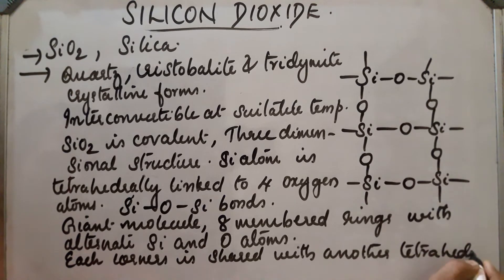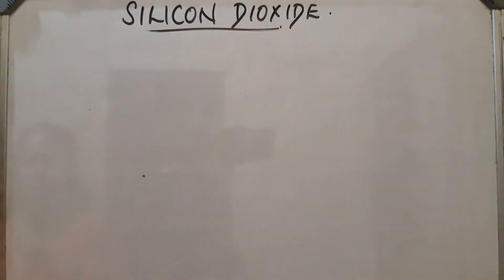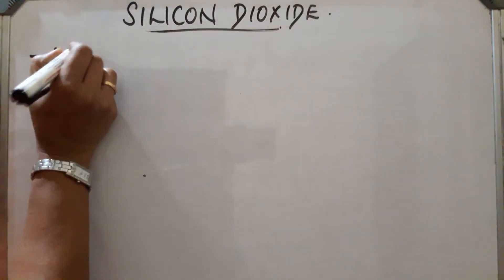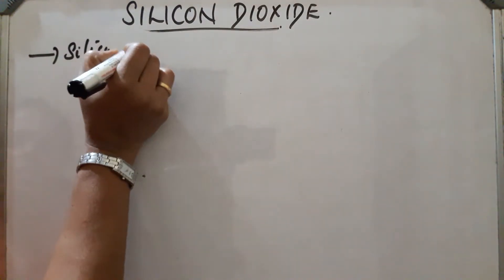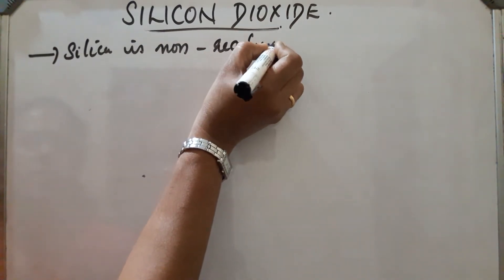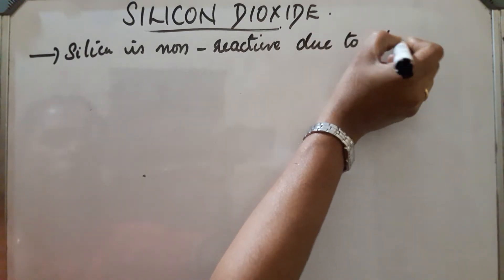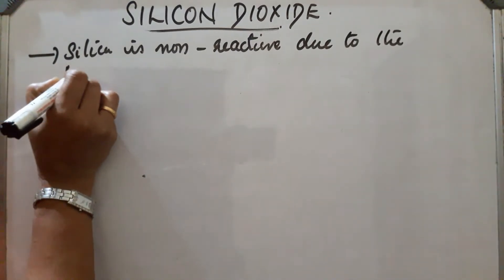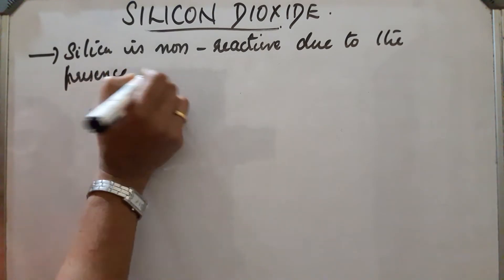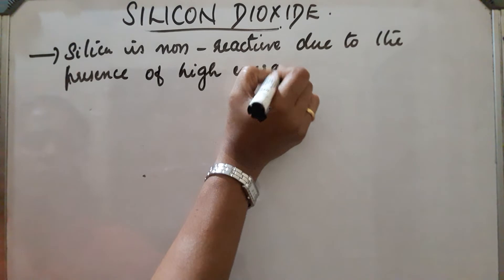So this will be the structure of silica, SiO2. Next, silica in its normal form is non-reactive. Silica is non-reactive in its normal form, this is due to the presence of high energy Si-O bond.